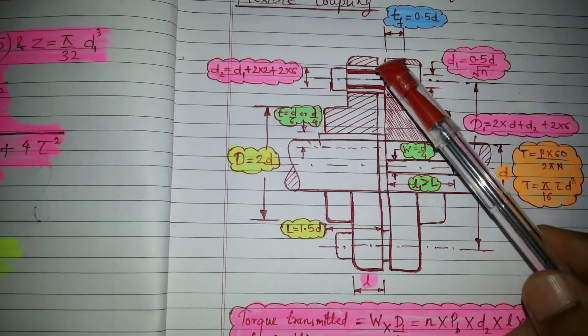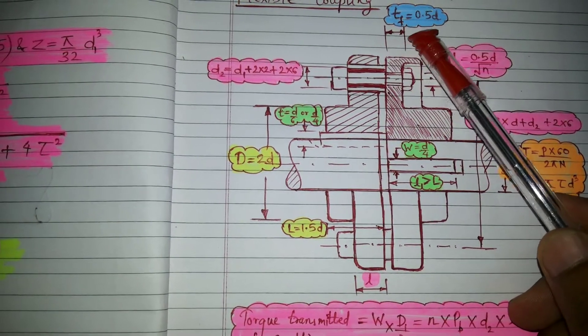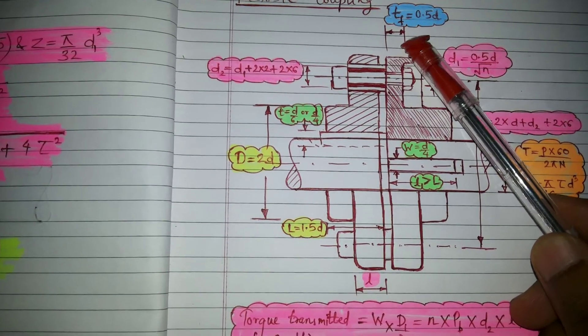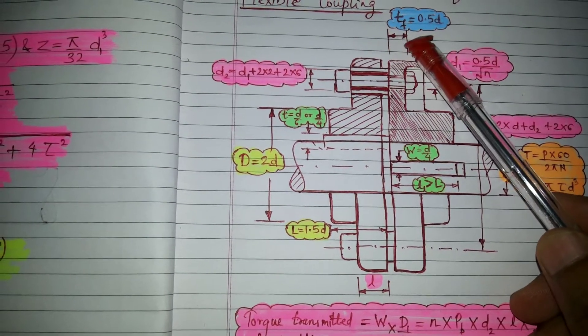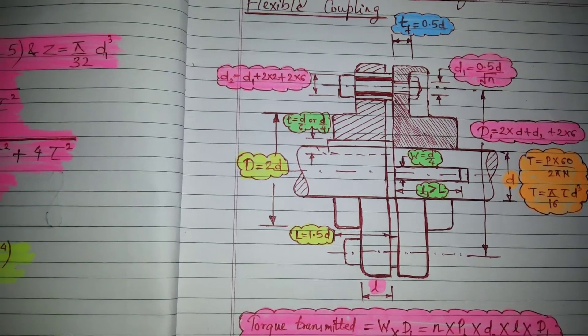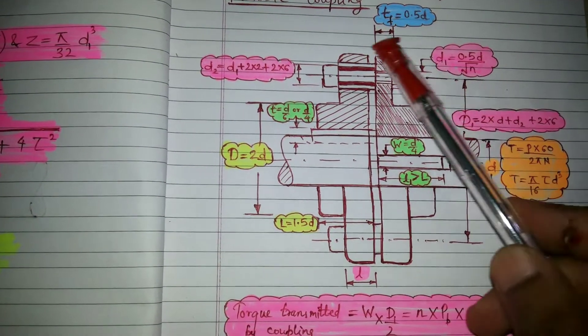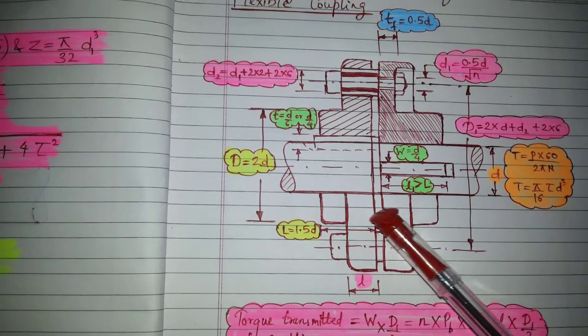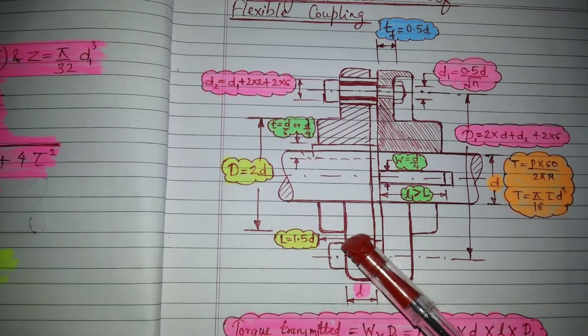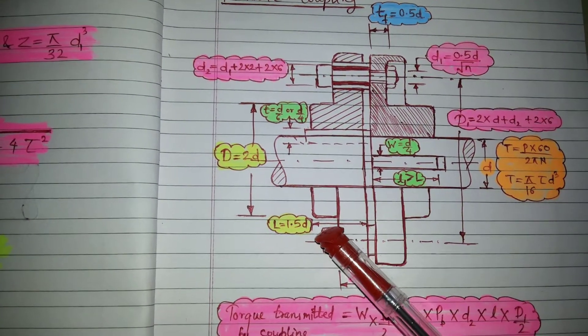Then step number five is related to the flange. So Df is equal to 0.5 D. So this is design of flexible coupling. Here we have mentioned only about the dimension.